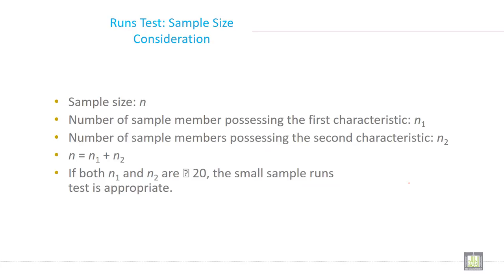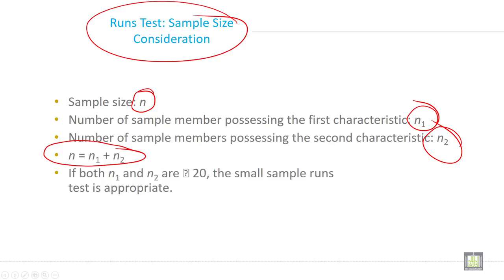Sample size consideration in the runs test: Sample size is n. Number of sample members possessing the first characteristic is n1, and number possessing the second characteristic is n2. So n equals n1 plus n2. If both n1 and n2 are less than or equal to 20, the small sample runs test is appropriate.